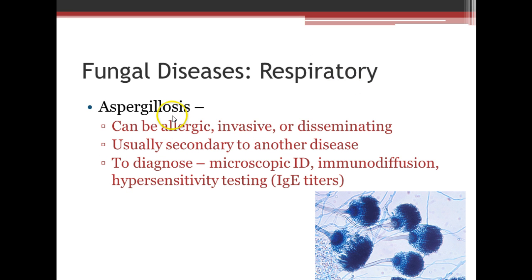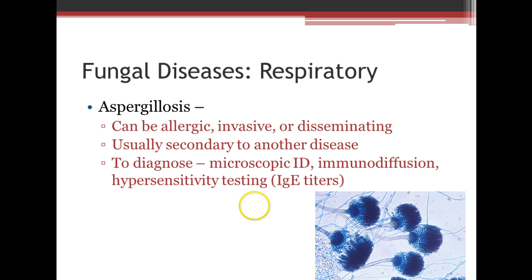The next 'osis' is aspergillosis, which can be allergic, invasive, or disseminating. It is usually secondary to another disease — commonly seen in patients on long-term antibiotics or who are immunosuppressed. Diagnosis is typically through microscopic identification; the organism looks like budding flowers under the microscope.